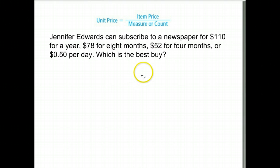Jennifer Edwards can subscribe to a newspaper for $110 a year. She can subscribe for $78 for eight months, $52 for four months, or for 50 cents a day, which is the best buy. So let's break these all down into a daily price. The daily rate, we have 50 cents a day. That one we really don't need to do any calculating on.